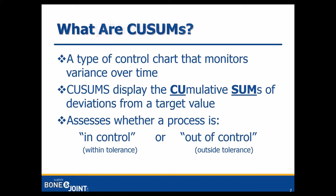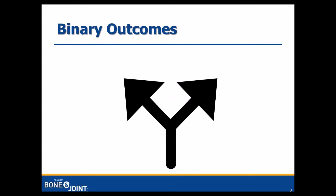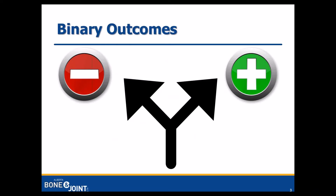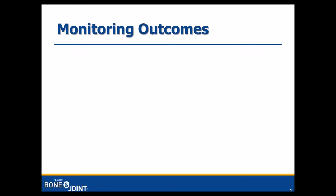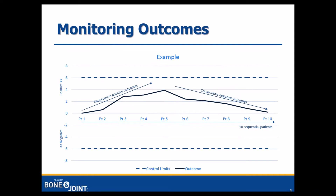To demonstrate, consider a binary event — something that has two possible outcomes, one positive and one negative. For instance, a patient that does not become infected is a positive outcome, whereas a patient that does become infected is a negative outcome. QSUMs monitor whether a process is in control by tracking sequential events and their outcomes. Positive outcomes result in an uptick, while negative outcomes result in a downtick.